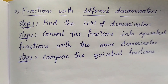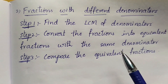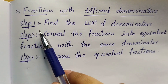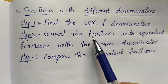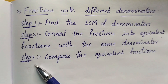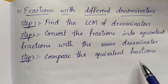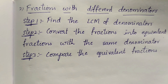Fractions with different denominators: how to compare fractions with different denominators and different numerators. Step 1: find the LCM of denominators. Step 2: convert the fractions into equivalent fractions with the same denominator. Step 3: compare the equivalent fractions. First find the LCM, next find the equivalent fractions for both fractions with the same denominator, then compare those fractions.